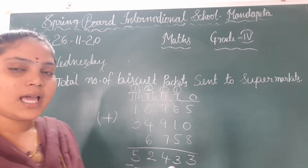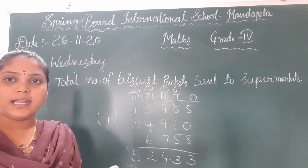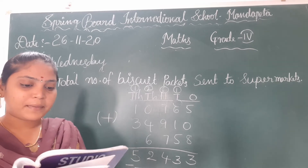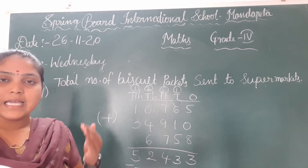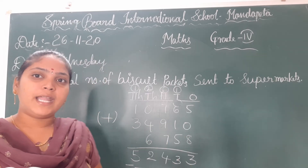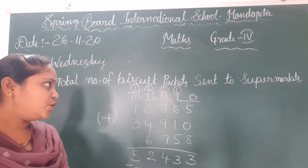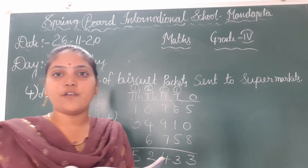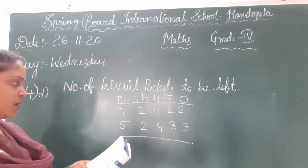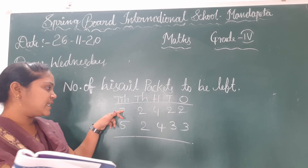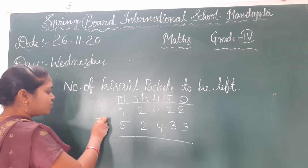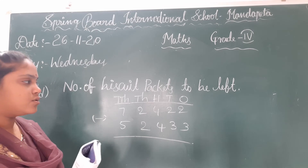Now you have to calculate the number of biscuits left. To calculate, you have to subtract: 72,422 — the total number of biscuits — minus the number of biscuits sent to the supermarkets, which is 52,433, to get the number of biscuits left.